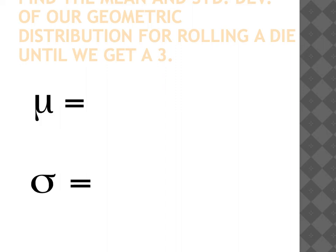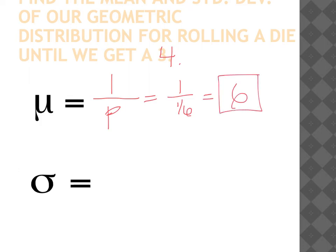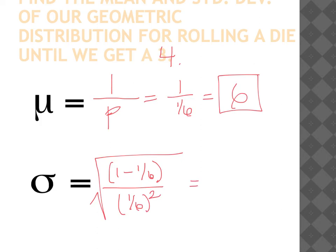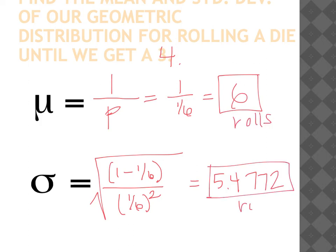To wrap up with our example: to find the mean and standard deviation of the geometric distribution for rolling a die until we observe a four, we take one over p — that's one over (1/6), which equals 6. So the expected number of rolls until we observe a four is 6. For the standard deviation, we compute the square root of (1 - 1/6) divided by (1/6)^2, giving approximately 5.477 rolls. It might seem counterintuitive that it takes six rolls on average, but look at how variable the distribution is — it can happen before six rolls, but we expect six in long-term behavior.